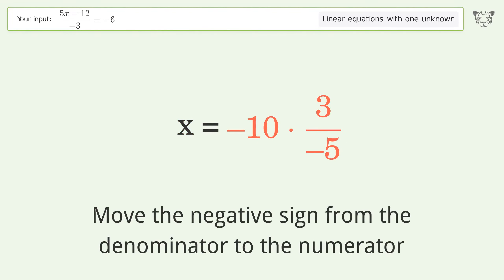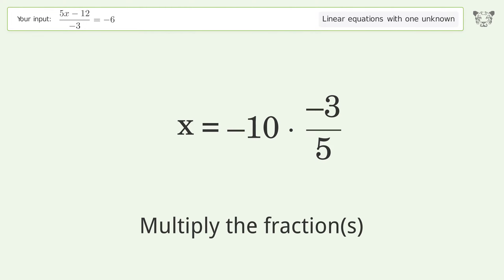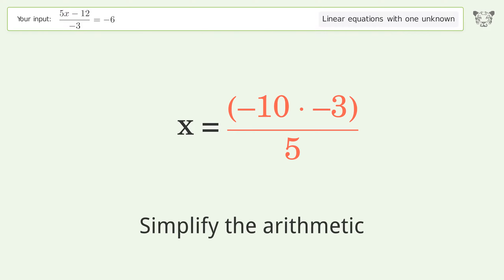Move the negative sign from the denominator to the numerator. Multiply the fractions. Simplify the arithmetic. And so the final result is x equals 6.